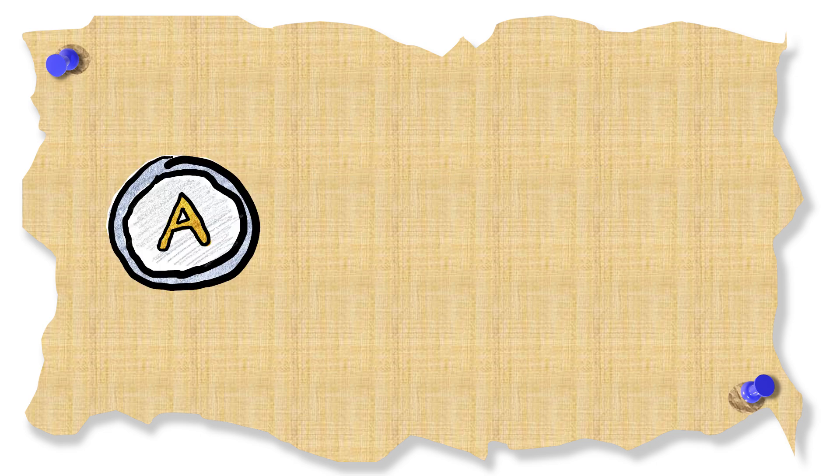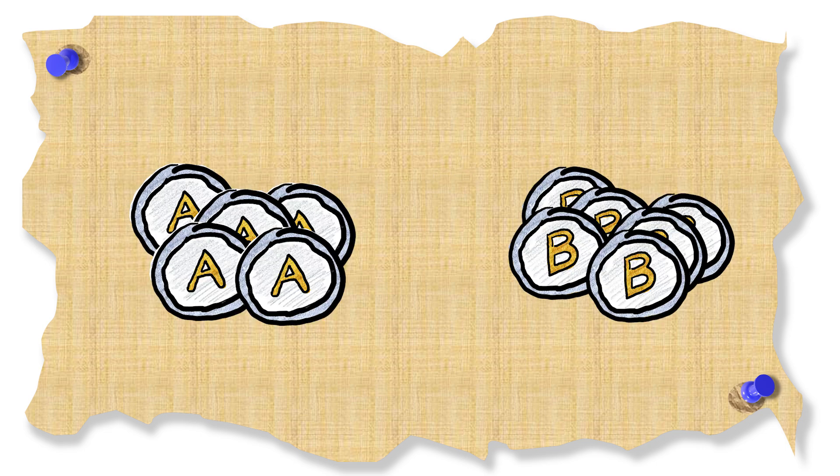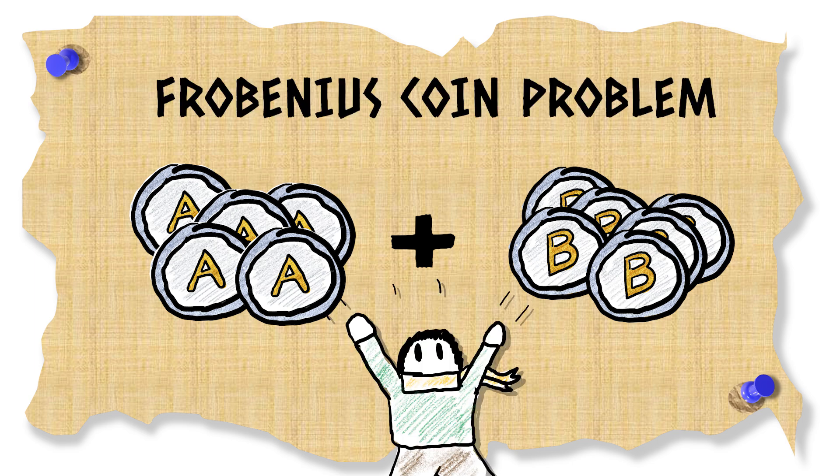If you're given coins of denominations A and B which numbers can you make as sums of them? This is called the Frobenius coin problem.